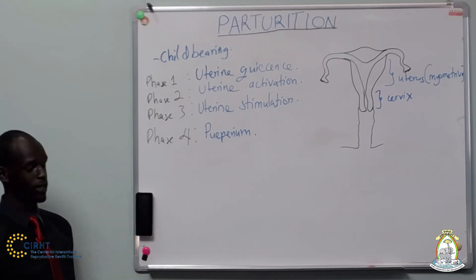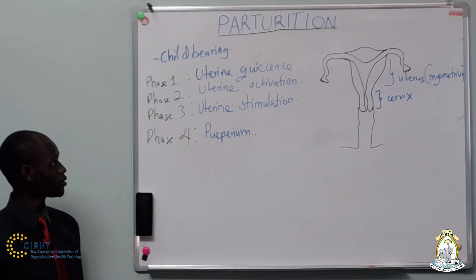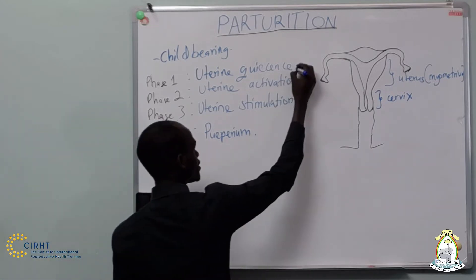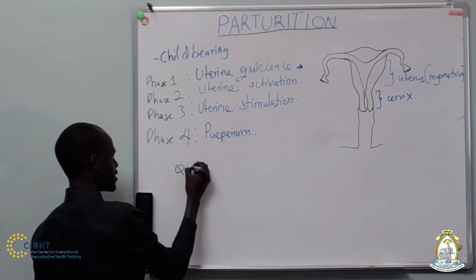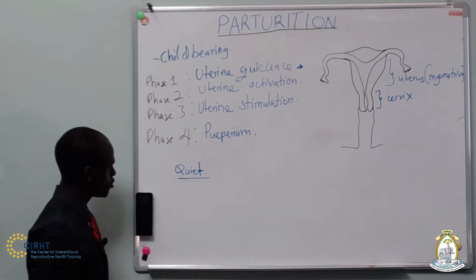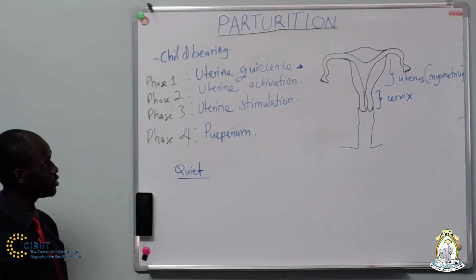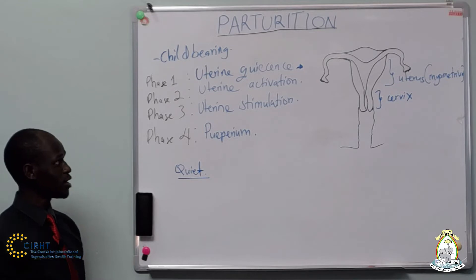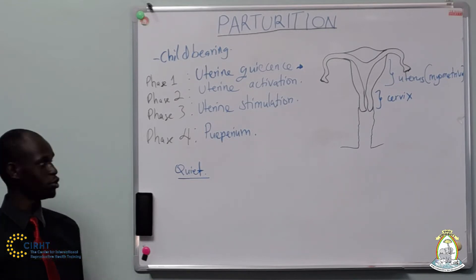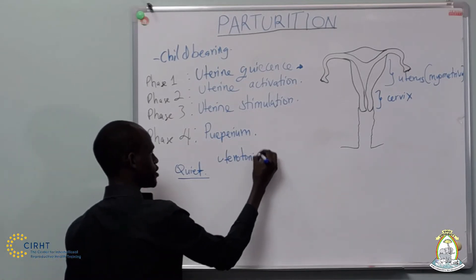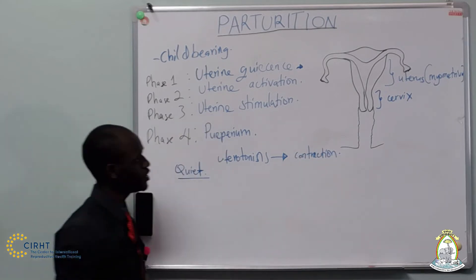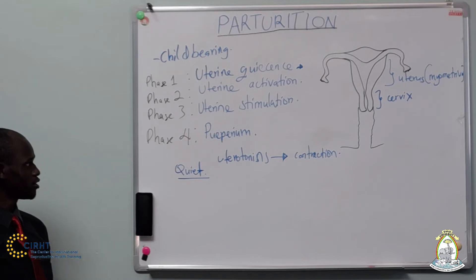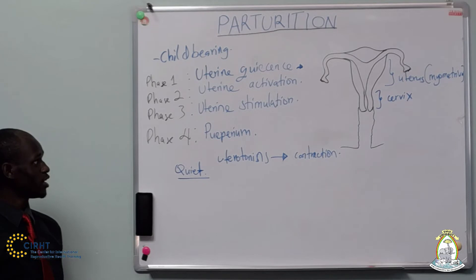Let's walk through each phase one by one. In the phase of uterine quiescence, as the word suggests, the uterus and cervix are basically quiet — as if the body is saying everyone be quiet, the baby needs to grow peacefully. The uterus is being prepared for childbirth, but during this phase it is very important that the uterus is not responsive to uterotonins. Uterotonins are all those factors or chemicals that can stimulate uterine contraction, such as oxytocin and prostaglandins. The myometrium is basically unresponsive to stimuli that cause contraction.